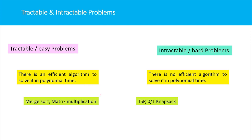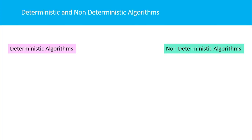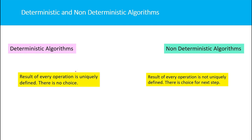To summarize, problems which have an efficient algorithm to solve them in polynomial time are called tractable problems. Now, there are two classes of algorithms: deterministic and non-deterministic algorithms.